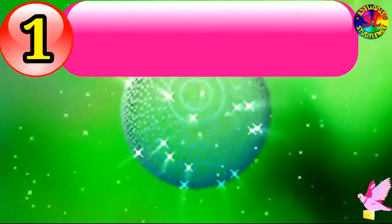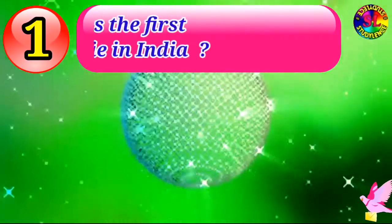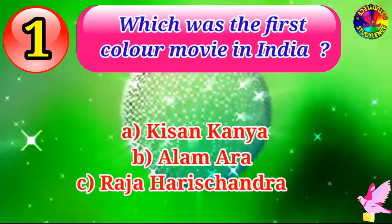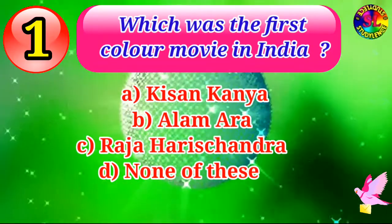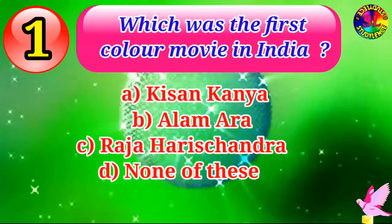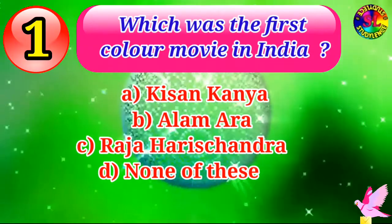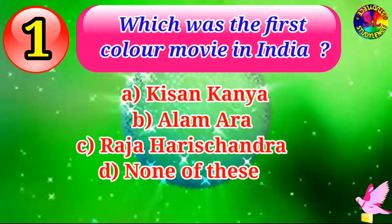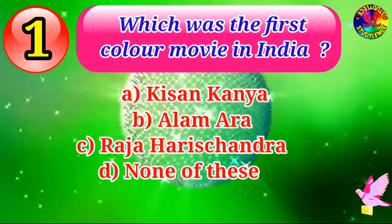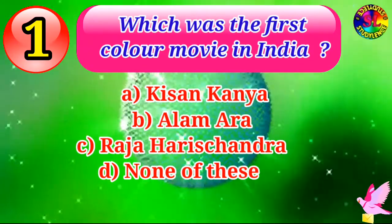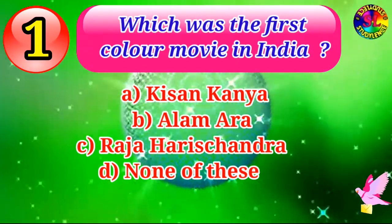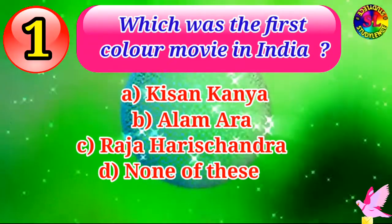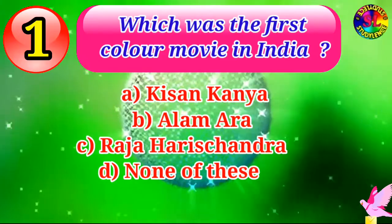The first question of the first Sunday is: which was the first color movie in India? A. Kishankanya. B. Alamara. C. Raja Harishchandra. D. None of these.